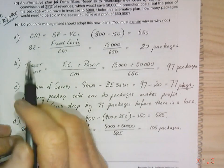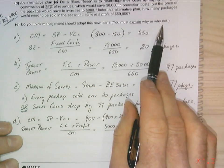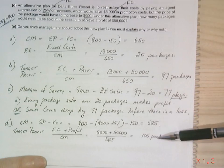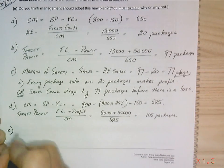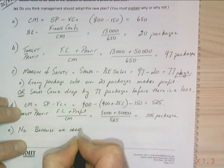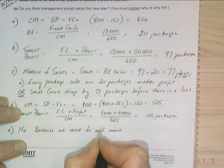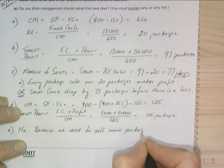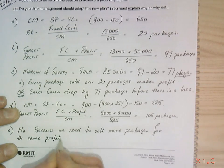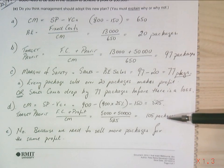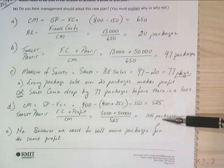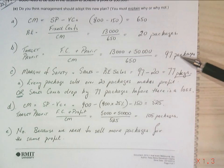So I've got 105 packages. Now the last question is: Do you think management should adopt this new plan? Explain why or why not. Well, we did have 97 packages for a profit of $50,000, and the new cost structure is 105 packages for $50,000, so I'm going to suggest no, because we need to sell more packages for the same profit. Alright, so it's pretty simple. If you were a salesman and I said look, I'll give you $50,000 if you sell 97 packages, or I'll give you $50,000 if you sell 105 packages, which one would you choose? Well I'd always choose the less work, more profit.